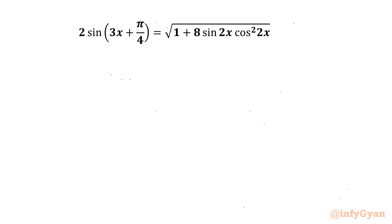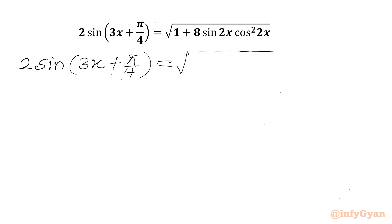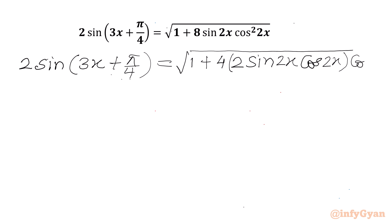Let us get started by writing our equation: 2 sin(3x + π/4) equals the square root of 1 plus — we can write 8 as 4 times 2 — so 4 times 2 times sin 2x times cos 2x times cos 2x.